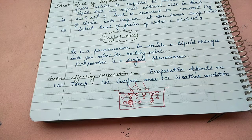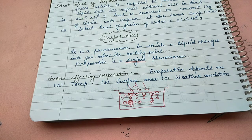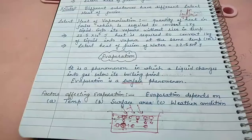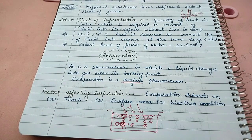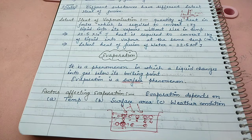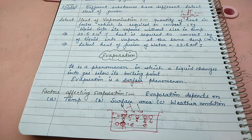This is why it mainly rains in summer — because continuous evaporation forms clouds, leading to rain. In winter, evaporation is less, so rainfall is also less. Evaporation is a very important process. Today we explained what evaporation is, and in the next class we will discuss factors affecting evaporation, after which we will finish this chapter.